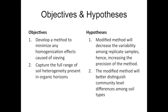To get around that, we worked on modifying the method so you capture the part that's normally lost. The objectives were to develop a method that minimizes homogenization effects when screening out other portions, and to attempt to capture the full range of the soil — which is a very heterogeneous type. The hypotheses were that the modified method will decrease variability among replicate samples by using a bigger volume to capture more soil heterogeneity, and will be better able to distinguish CLPP among soil types.